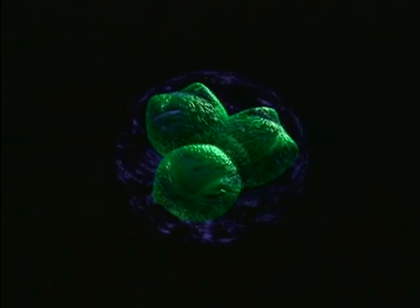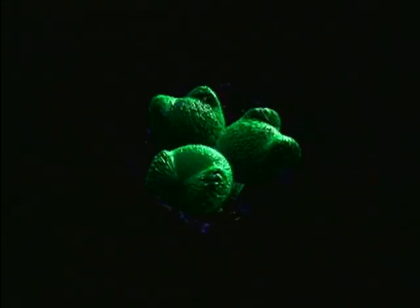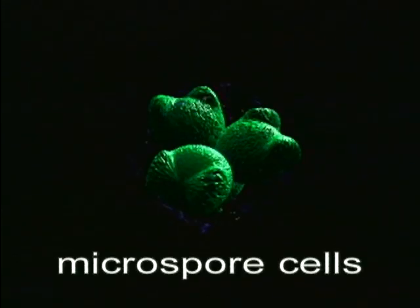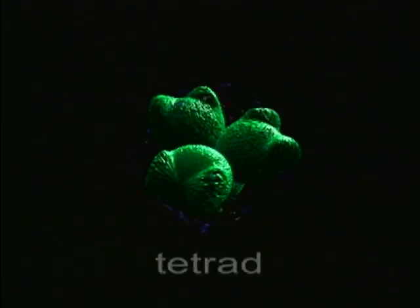Each nucleus becomes surrounded by a wall that begins to enlarge at two points. The resulting microspore cells remain attached to one another and are known as a tetrad.